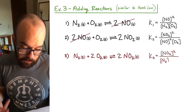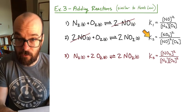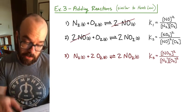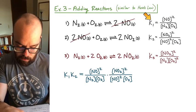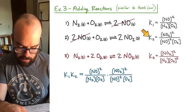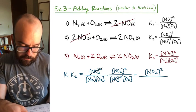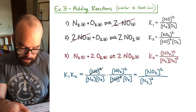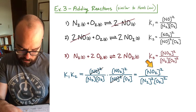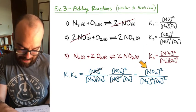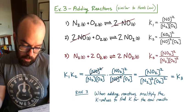K3 equals NO2 squared over N2 times O2 squared. To prove that K3 equals K1 times K2: multiplying K1 times K2, we write out both expressions and cancel NO squared from both numerator and denominator. What remains in the numerator is NO2 squared, and in the denominator N2 and O2 squared — which is exactly equal to K3. So this shows that the K value of the combined reaction equals K1 multiplied by K2. Rule three: when adding reactions, multiply the K values to find K for the new reaction.